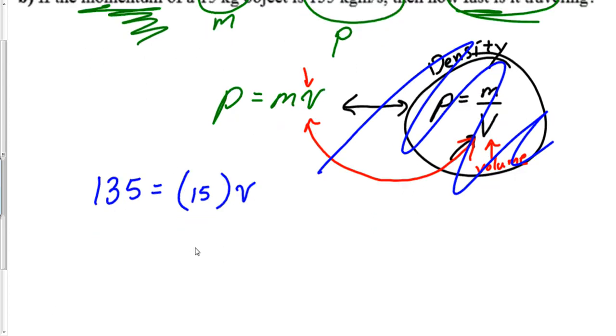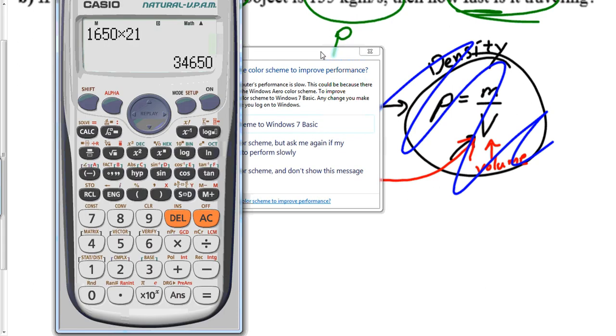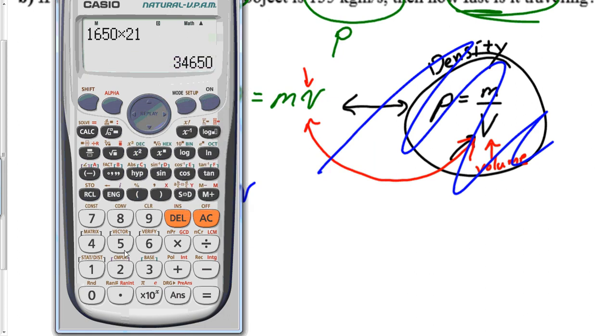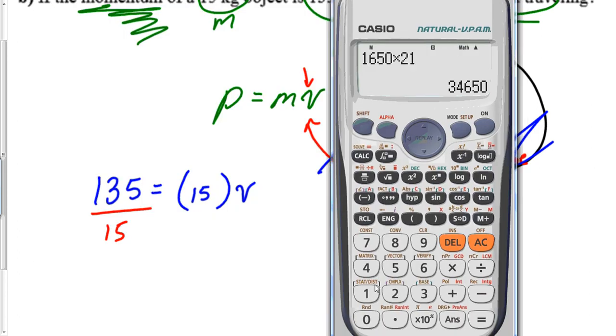It's going to be some insane math on this one. Divide both sides by 15. 135 divided by 15.